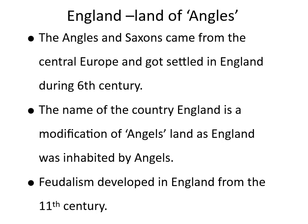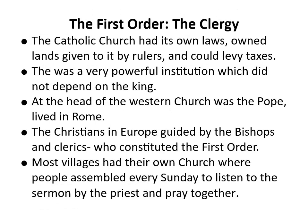England means 'land of Angles.' The Angles came from central Europe and settled in England during the sixth century. The name 'England' is a modification of 'Angles' land,' as England was inhabited by Angles. Feudalism developed in England from the 11th century.